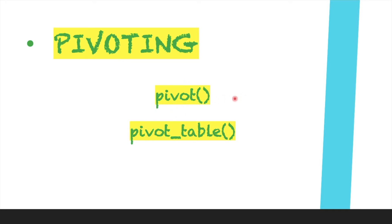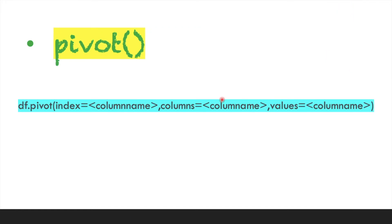To perform pivoting in pandas we have to use two methods: pivot and pivot_table. Rearranging of rows and columns in pandas can be simply performed with the help of the pivot function. This is the basic syntax — we use the DataFrame object along with dot notation and the pivot function.